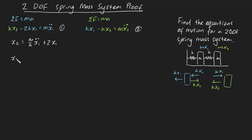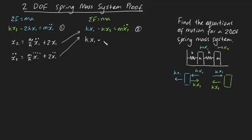If we differentiate twice, we're left with x2 double dot equals (m/k) x1 quadruple dot plus 2x1 double dot. What's important about this is it means we can substitute out the values of x2 from the second equation and have an equation just involving x1. So substituting in: we get kx1 minus k times [(m/k) x1 double dot plus 2x1], equal to m times [(m/k) x1 quadruple dot plus 2x1 double dot].